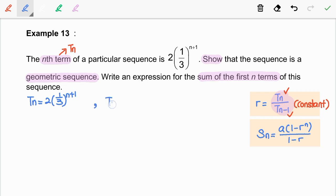So, tn-1 is equal to—here we replace n with n-1. So, we have 2 times 1 over 3 to the power of n.